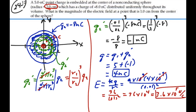As drawn, the field points radially outward from the center of the sphere. Since we placed point P at x equal to 1 centimeter, the E field points outward in that direction, with a magnitude of 3.6 times 10 to the 5 newtons per coulomb.